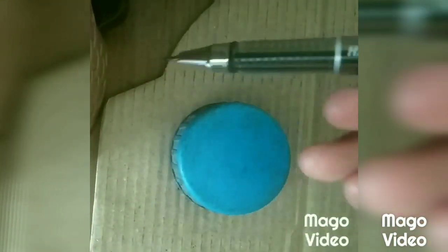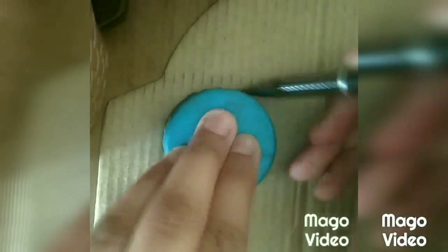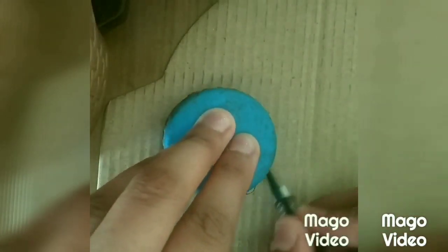A cardboard sheet, a cap, a pen, a yellow foam sheet, and glue. First we will take a cardboard sheet and place our cap over it. With the help of a pen we will draw a circle around it.